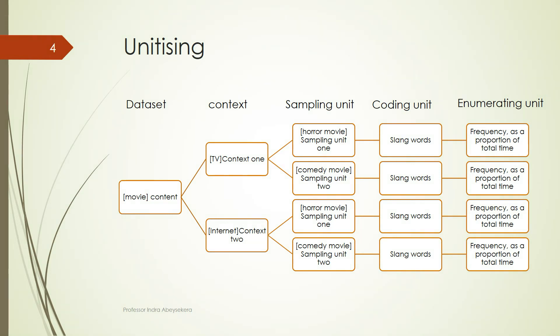Using words, we can enumerate, and the enumerating unit could be the number of times slang words appear compared to all the words, and we take the proportion. Or we take the gross number of frequency, and that becomes the enumerating unit.